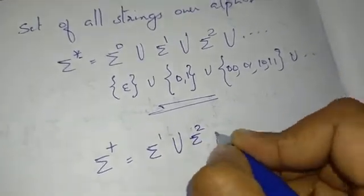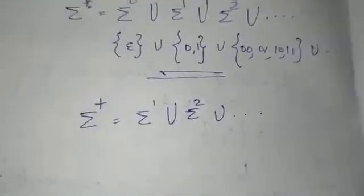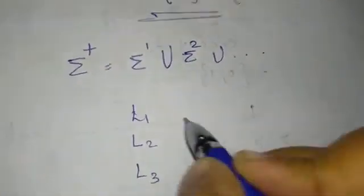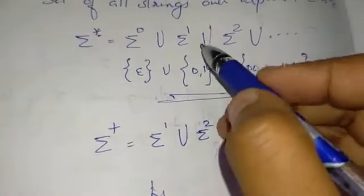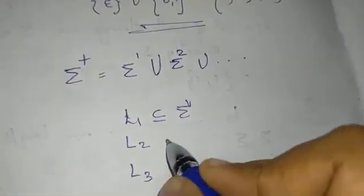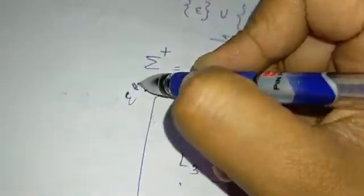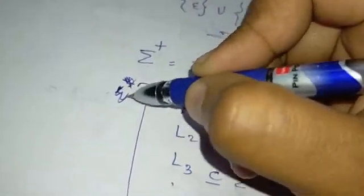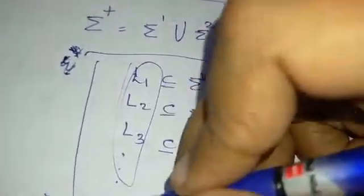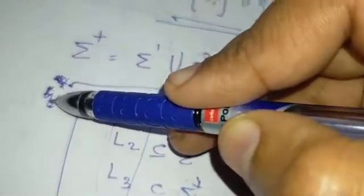Similarly, sigma plus equals sigma^1 union sigma^2 union ..., which is 1 or more combinations. Sigma star is Kleene star closure. The number of strings possible over sigma is infinite. Languages are infinite. Strings are infinite and languages are infinite. The number of languages possible over sigma star is also infinite.